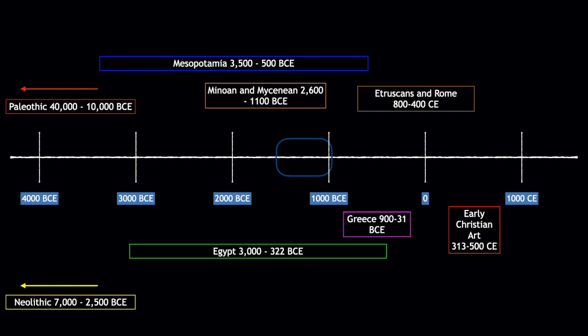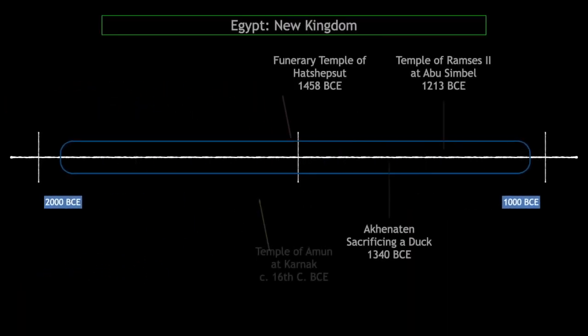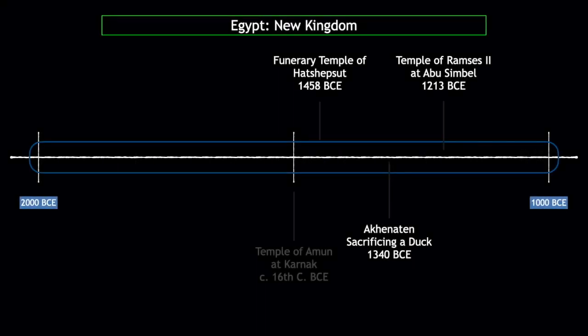Hey everyone, welcome back. We are finishing up Egypt today. You can see in our timeline we're at about 1500 to about 1000 BCE. This is before even the rise of Greece, a thousand years before the rise of Rome, and this is kind of the high point of the Egyptian Empire. Gone are the days of giant pyramids, but not of giant construction projects. Today we're going to look at three giant construction projects — two are still kind of around, and one is absolutely gone, just a desert plain where it used to be.